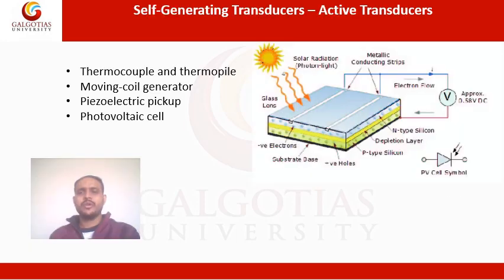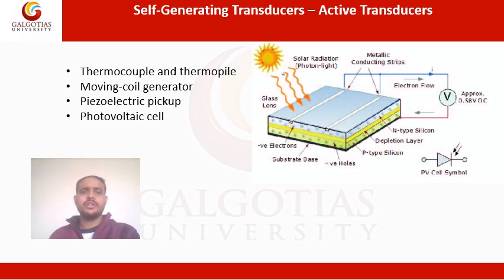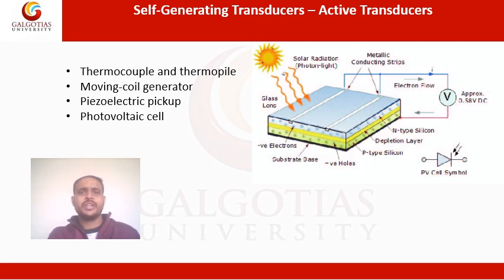Active transducers are also called self-generating transducers because they do not require any external power source. They produce an analog voltage or current when stimulated by some physical form of energy, having their own power source. Types include the thermocouple and thermopile, where an EMF is generated across the junction of two dissimilar metals or semiconductors when that junction is heated — used for measuring temperature, heat flow, and radiation.